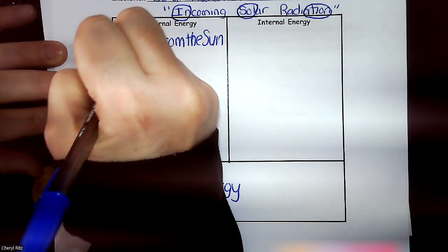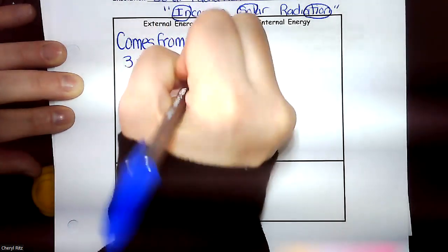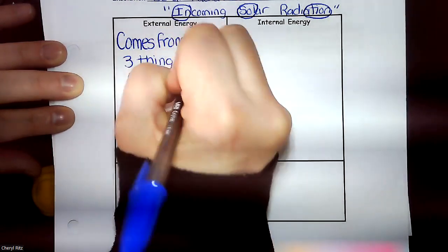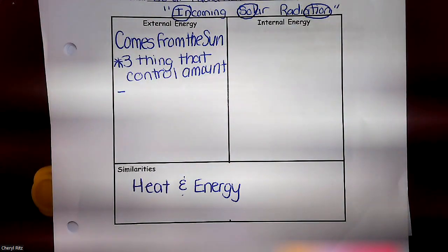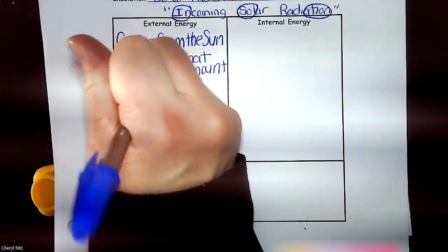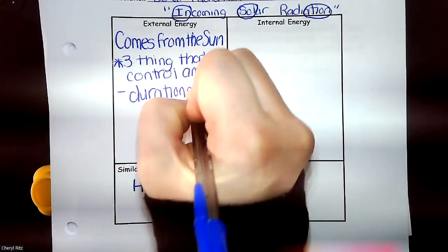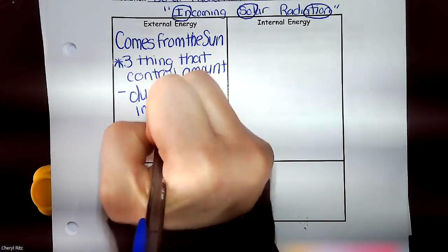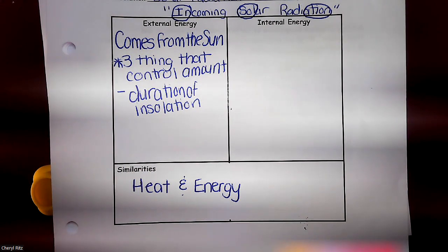How long the sun is around — does anybody remember the official term for that? What is the actual phrase for how long the sun is around? Duration of daylight — if you have it, or insolation. If you do not have that word please add it. Duration of insolation — duration just means how long it's around, or how long it's out.